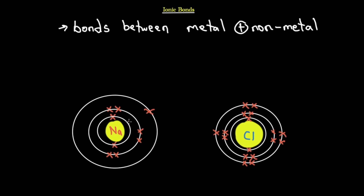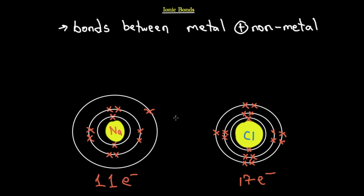Sodium has 11 electrons since it's the 11th element on the periodic table. Chlorine has 17 electrons since it's the 17th element. Chlorine has two electrons in the first shell, eight in the second, and seven in the valence shell. Sodium has two in the inner shell, eight in the second shell, and one in the outermost third shell. So what happens when they come in close proximity?